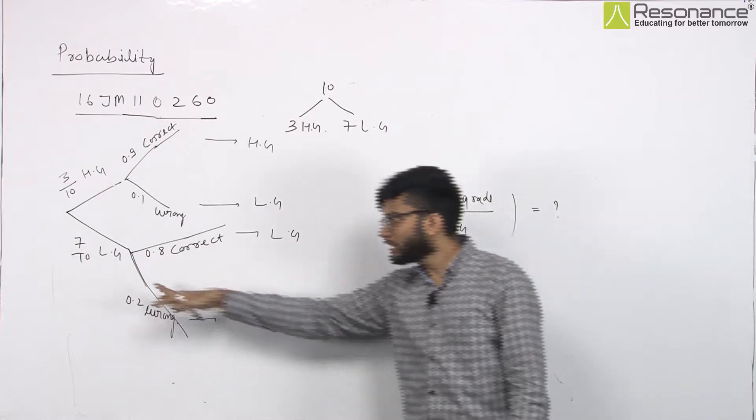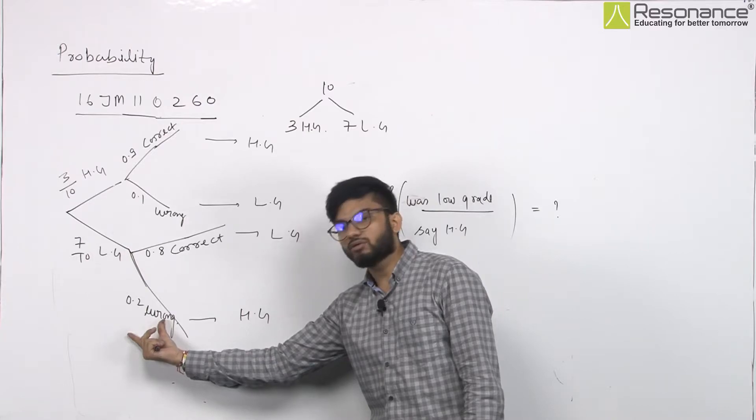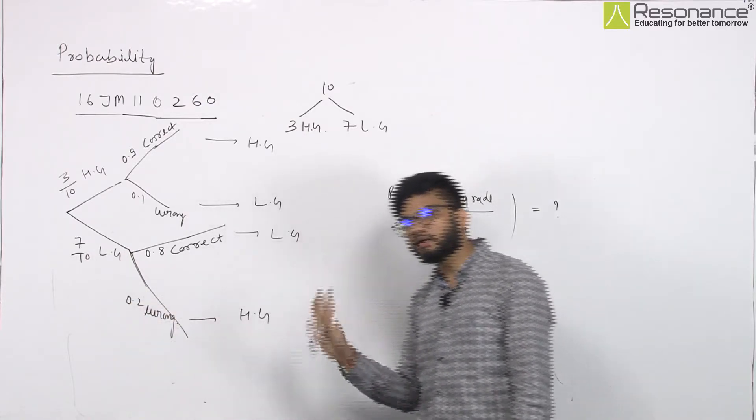So, here we have said that the low-grade has 0.8 chances are correct. It is low-grade. And 0.2 chances are wrong. That the low-grade is wrong. It is high-grade.